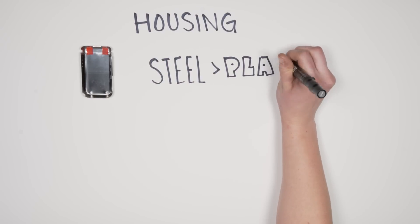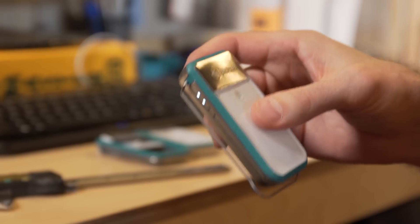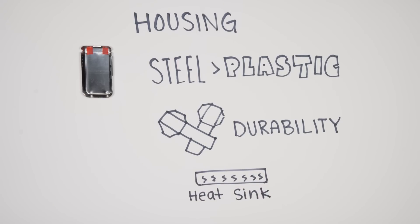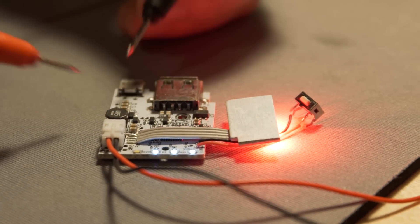For the housing of the PowerLight Mini, we chose stainless steel, a material thinner than any plastic while adding strength and durability. Plus, that steel doubles as a heat sink, keeping the LEDs cool and running more efficiently.